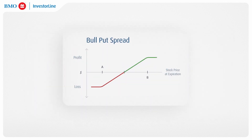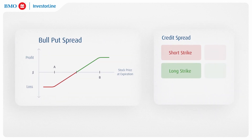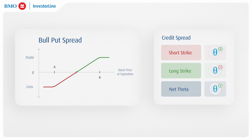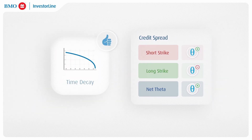A multi-leg strategy, like a credit spread, is a good example of this. Because the short strike for a credit spread will almost always be closer to being at the money than the long strike, the short strike will have a higher positive Theta, while the long strike has a lower negative Theta. Therefore, the net Theta will be positive, which indicates that this strategy will have time decay working in its favor and will erode in value by the net Theta, assuming everything else is equal.